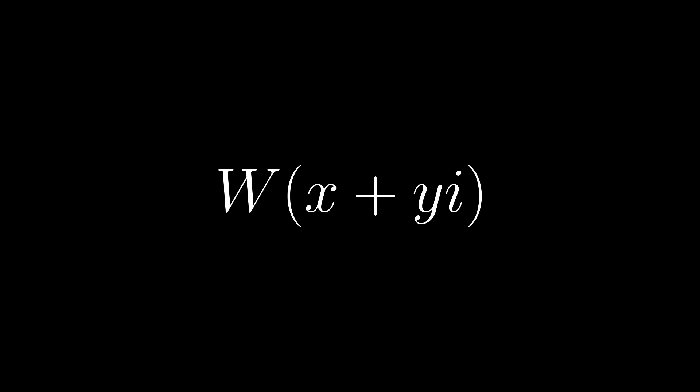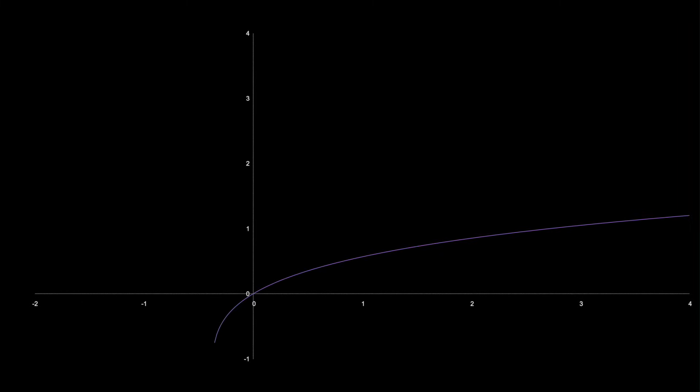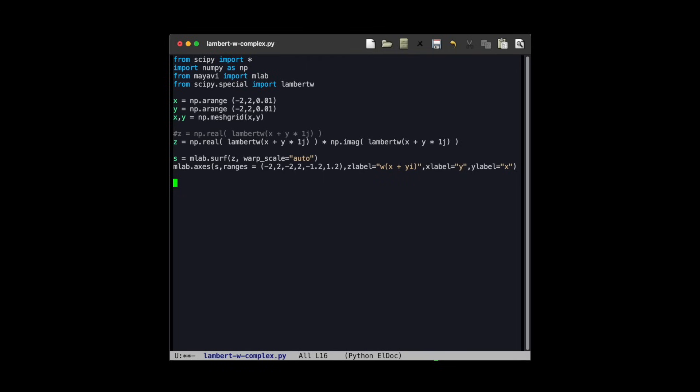Now since we can apply the Lambert W function to complex numbers, we can also graph it on the complex plane. Come on, you knew we were going to do this! First, let's review the graph for real numbers. Note that it's undefined for real numbers less than negative 1 over e, and has this gentle slope as it increases in the positive direction.